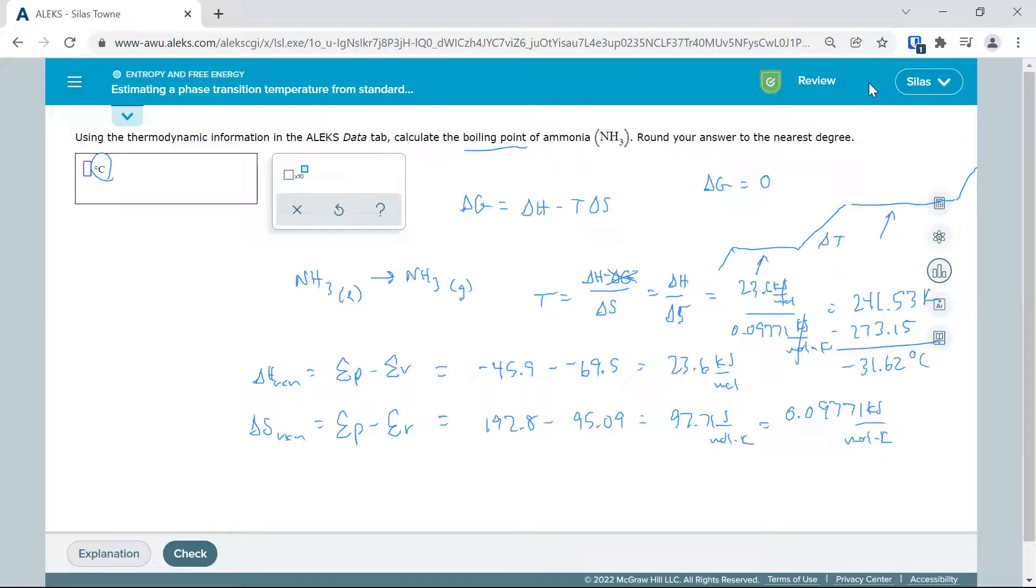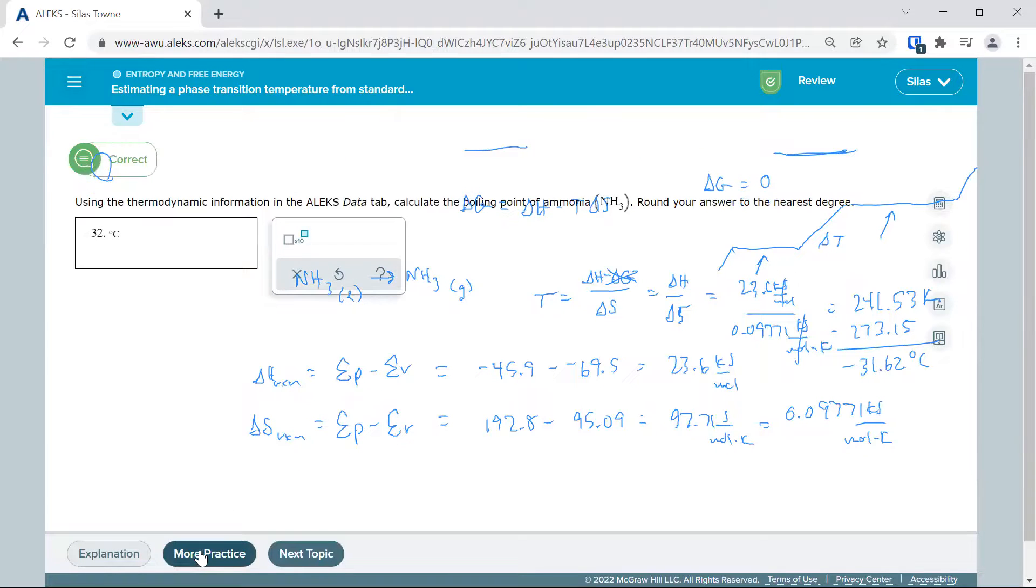Now it's ammonia, so the gas is just telling me it's a gas at room temperature. So I'm going to plug this in. It likes that decimal point. It says nearest degree up here. I'm going to say negative 32 degrees. There we go.